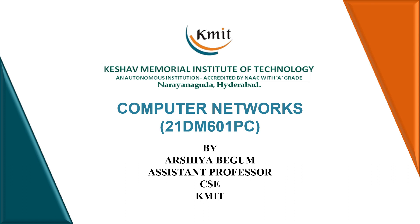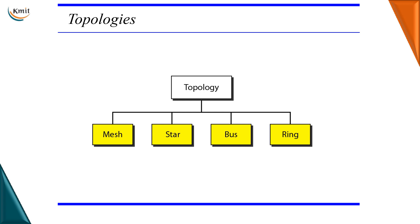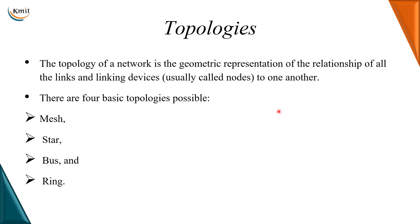Hello all, we are going to discuss a very important concept in computer networks: network topologies. There are four basic network topologies — mesh, star, bus, and ring. A topology can be defined as the geometric representation of how the devices are connected to each other. It is basically how a network is physically laid out.